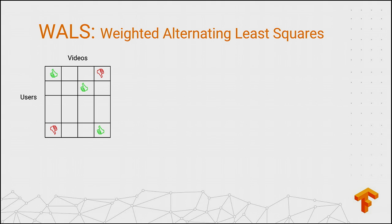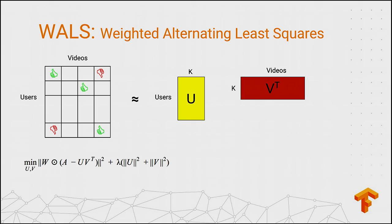Next, we have WALS — matrix factorization using weighted alternating least squares. You're given a very sparse matrix; for example, ratings that users have provided on videos. The matrix is sparse, so not all videos are rated by each user. You want to answer questions like which video to recommend next, or to find user-user or video-video similarity. This is done by factorizing the huge sparse matrix into a product of two dense factors. The loss is weighted, which allows you to downweight unrated entries in the original input or to avoid spam or popular entries from drowning the total loss.